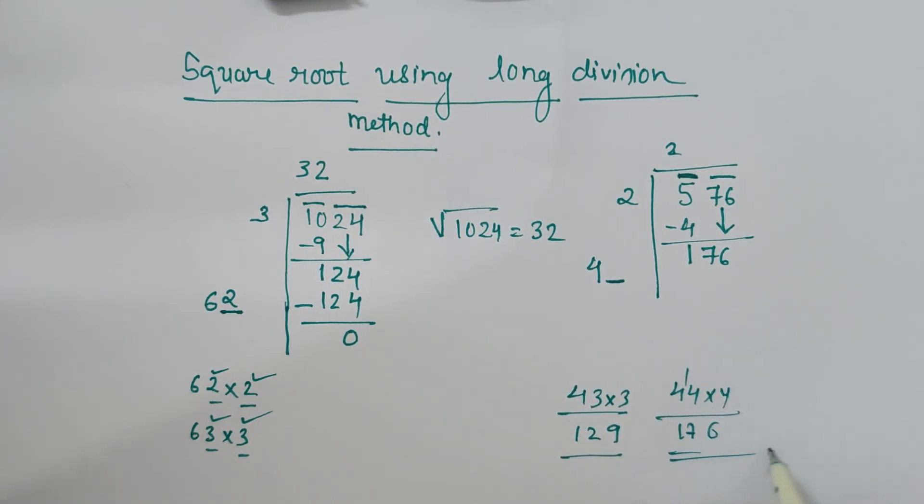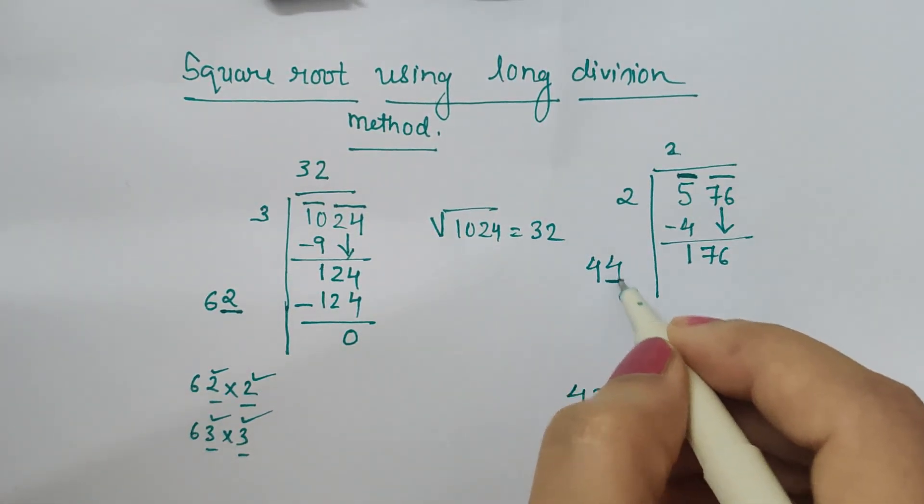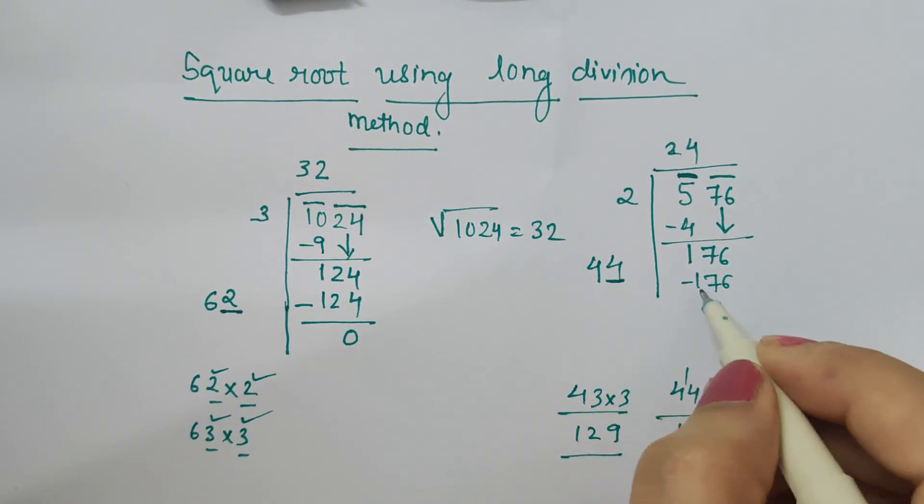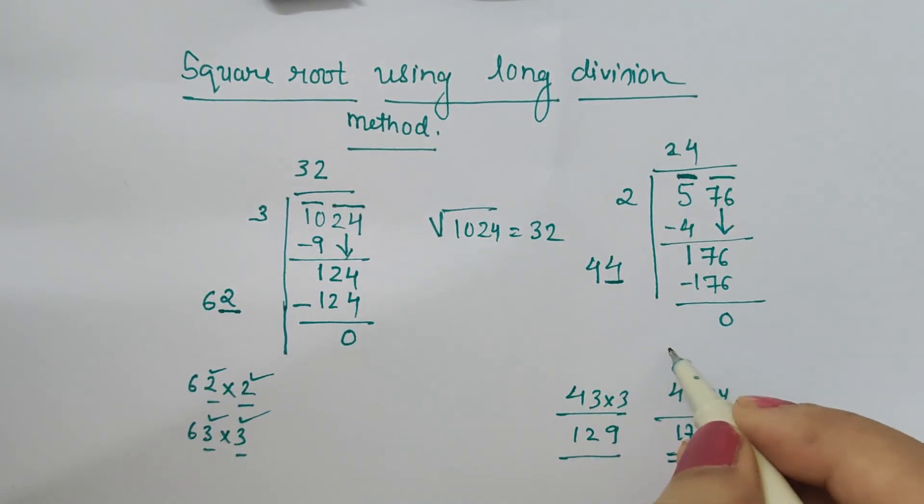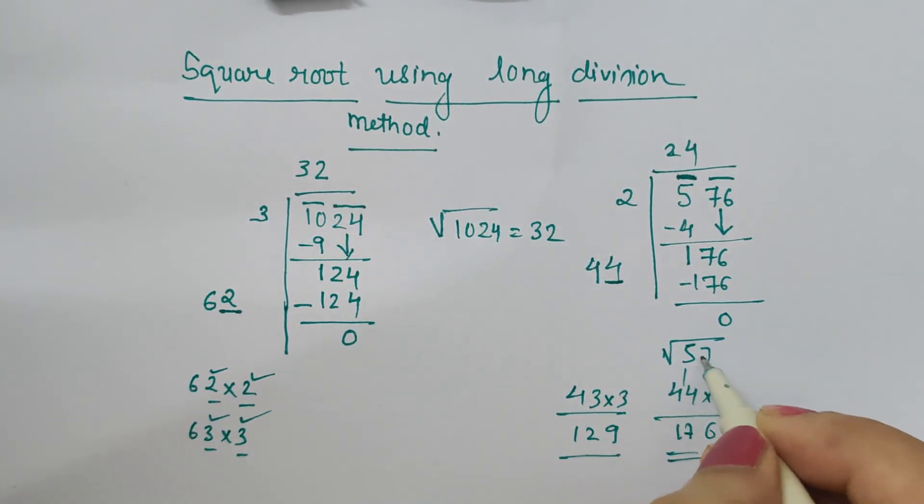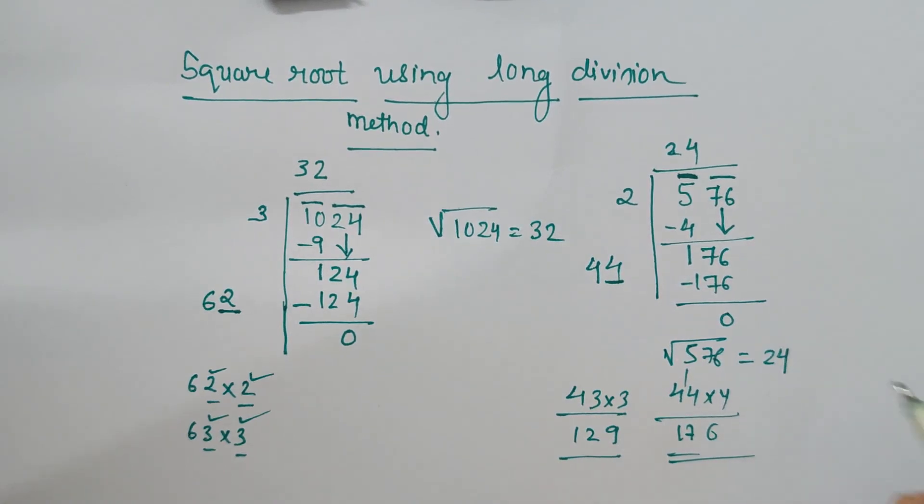So 44×4 gives us 176, so square root of 576 is 24. Thank you.